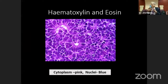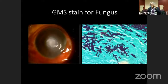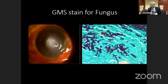With hematoxylin and eosin stain, cytoplasm appears pink and nuclei appear blue. In case of corneal fungal infections, we do the GMS stain for fungus — with a green background, you can see black septate fungi.